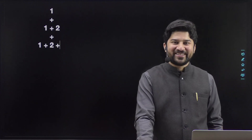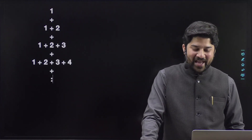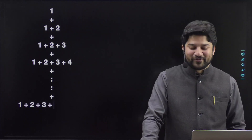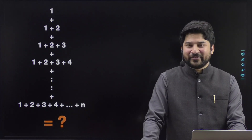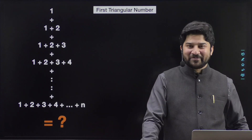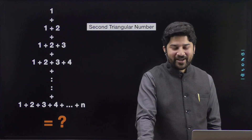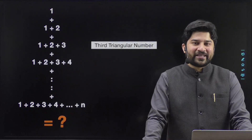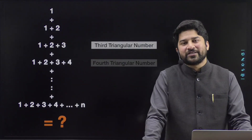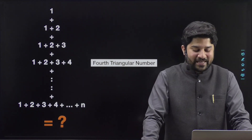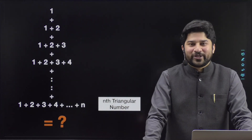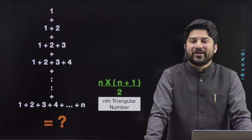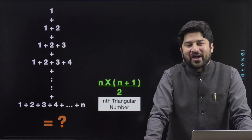We have the series 1 + (1+2) + (1+2+3) + (1+2+3+4) + ... up to (1+2+...+n), and we need to find its sum. If you notice, the first term is 1, which is the first triangular number. The second term is the sum of the first two natural numbers — the second triangular number. The third term is the third triangular number, and so on. The nth term is the nth triangular number, which equals n(n+1)/2.